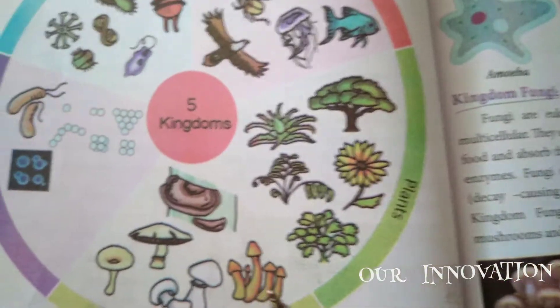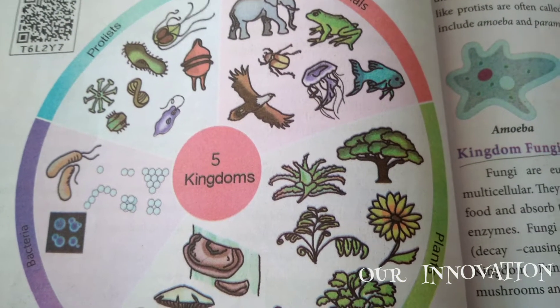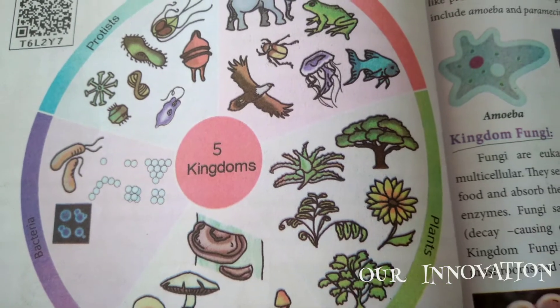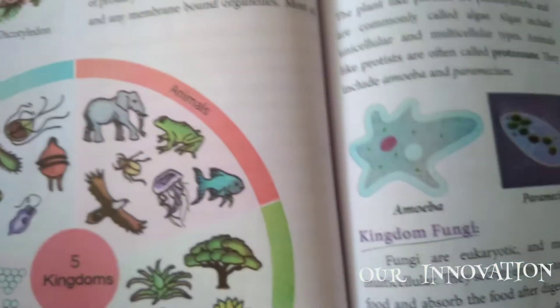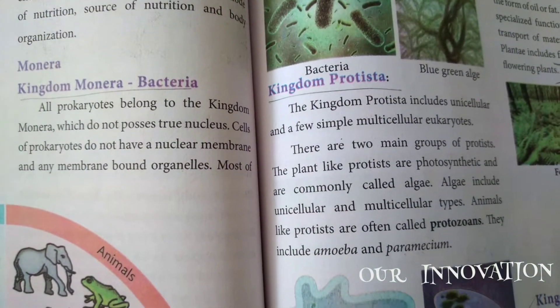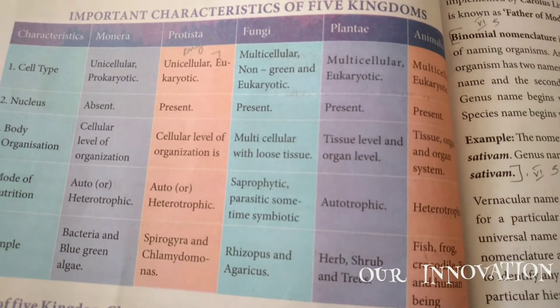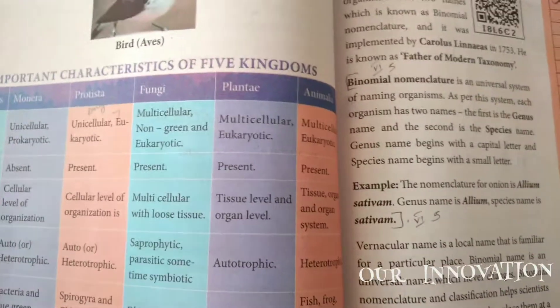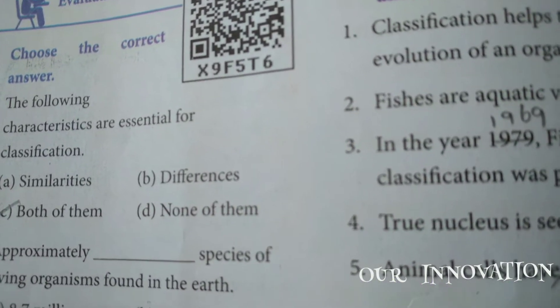Now here you can see the five kingdoms of classification. It is given here: Kingdom Monera, which is bacteria and unicellular organisms; then Kingdom Protista; then Kingdom Fungi; Kingdom Plantae; and Kingdom Animalia. These are the five kingdoms of classification. The characteristics of five kingdoms are given here, along with the merits and demerits of five kingdoms. This lesson covers all of these - read through and you will find it interesting.